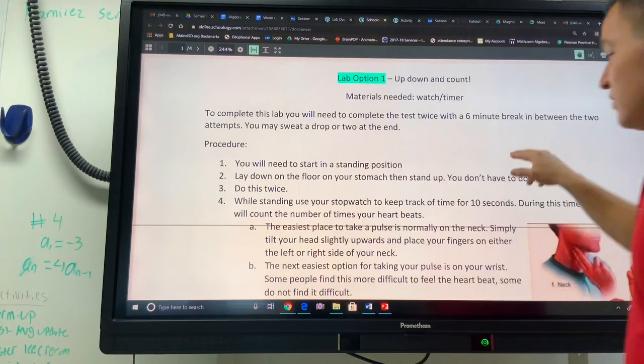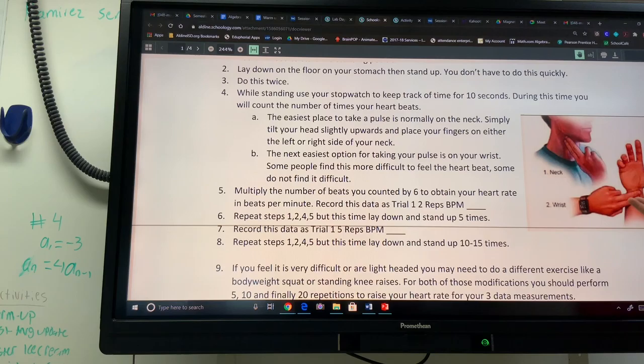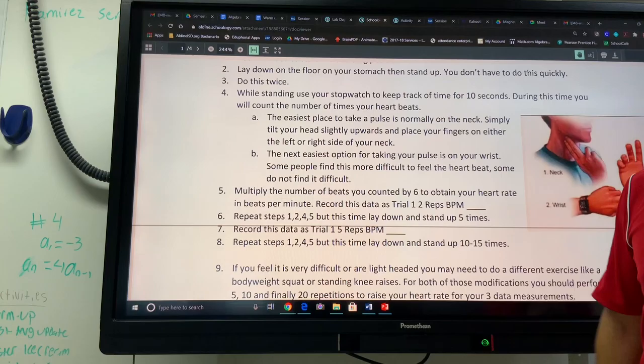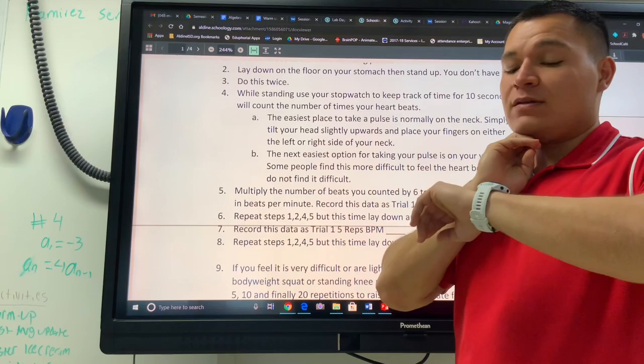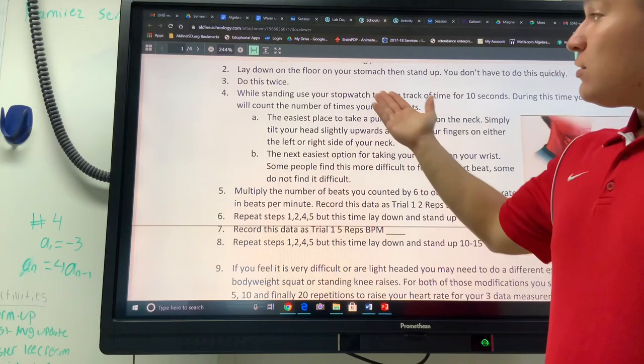What I have here is that you will lay down on the floor and then get back up, and you'll do that twice, and then you'll measure your heart rate. I also included a diagram to see that you can measure your pulse, your heart rate from your neck or from your wrist, and I explained how you get it from those two places. What you're going to do is you're going to look at your watch and then count the number of heartbeats that happen in 10 seconds.